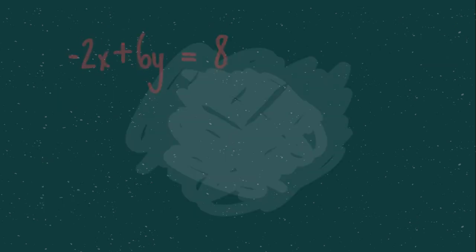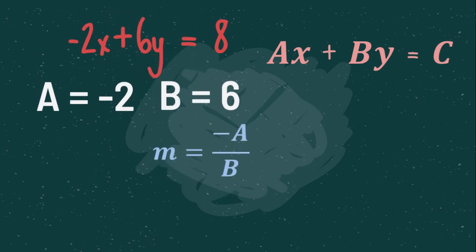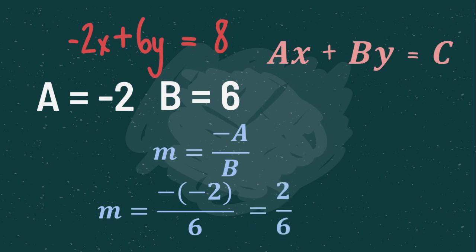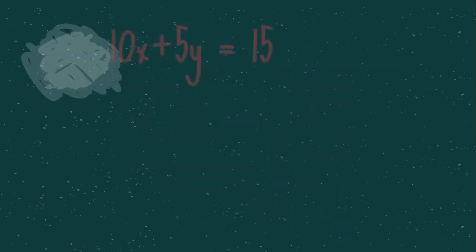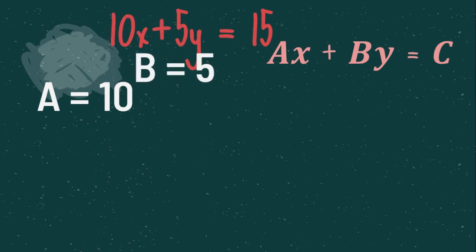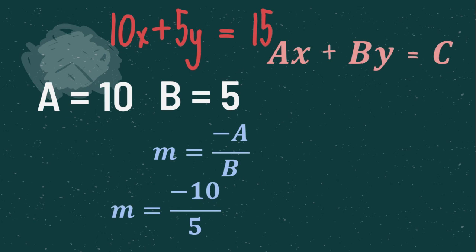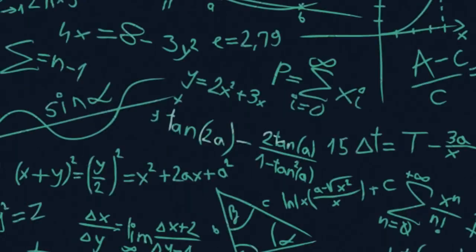For negative 2x plus 6y equals 8, we have a equals negative 2 and b equals 6. Using the formula: negative times negative 2 over 6 — negative times negative 2 becomes positive 2 over 6 — simplifying by dividing both by 2 gives one third. For 10x plus 5y equals 15, we have a equals 10 and b equals 5. Substituting: negative 10 over 5, which simplifies to negative 2. So the slope is negative 2.